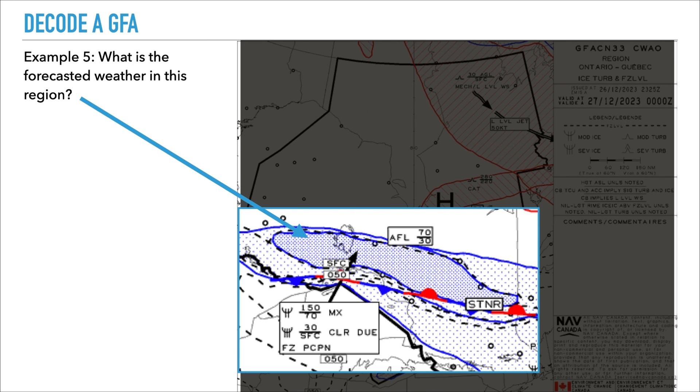You'll also see that there are two freezing levels: one based at the surface, and the other based at 5,000 feet. That's a pretty in-depth lesson on how to decode a GFA — it'll help you for any exams you encounter in the future. Thank you for watching, and I'll see you in the next one.